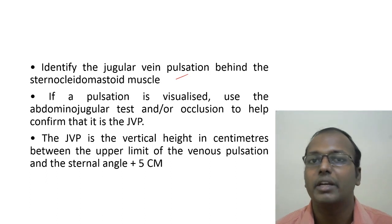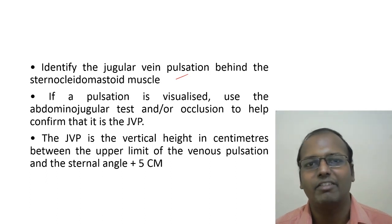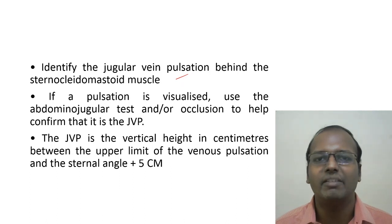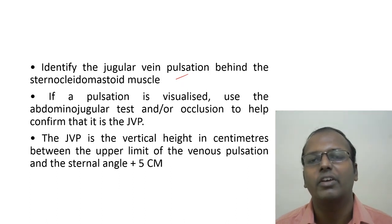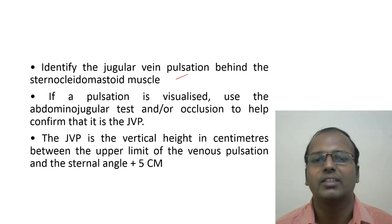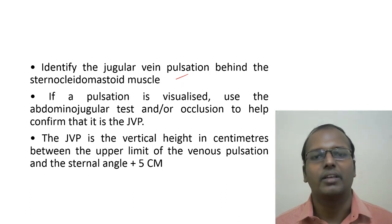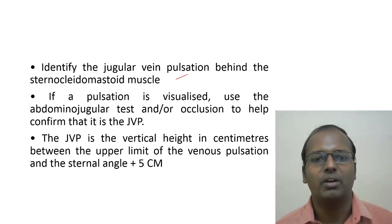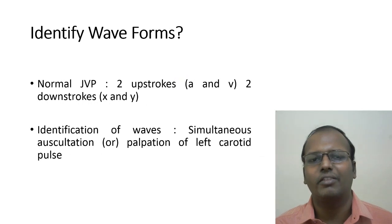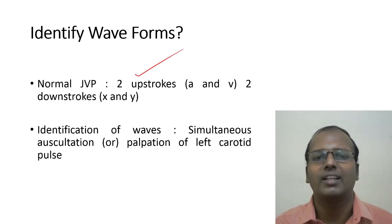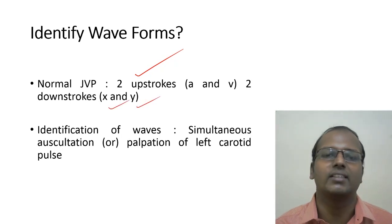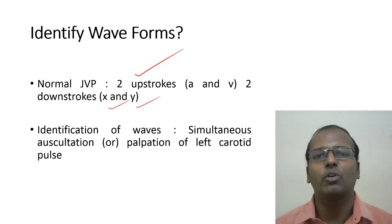To confirm a JVP waveform, use the hepatojugular reflex: press the upper abdomen or right hypochondrium for a few minutes — there will be a transient rise in JVP, which is normal. If this is confirmed, proceed to measure JVP. Normal JVP has two upstrokes (a wave and v wave) and two downstrokes (x descent and y descent). The c wave is described theoretically but not clinically seen.